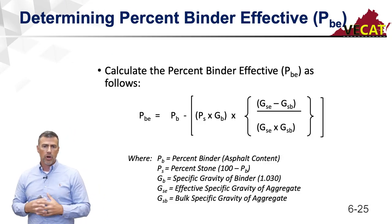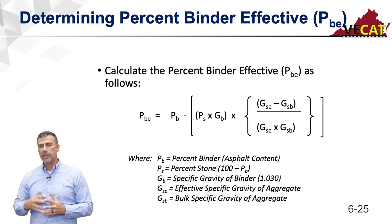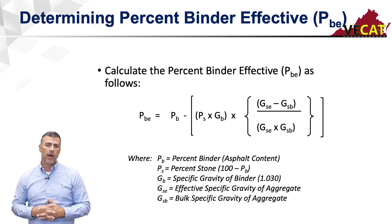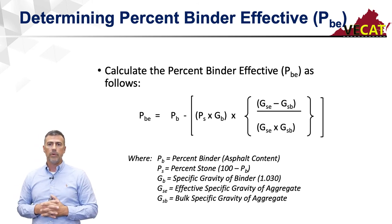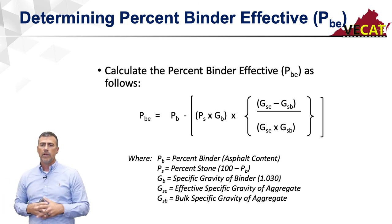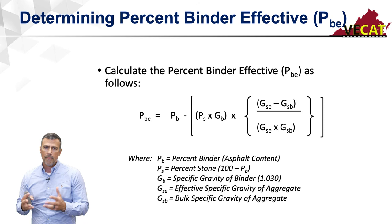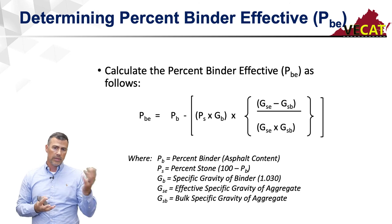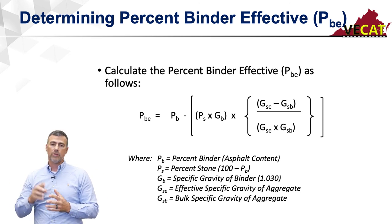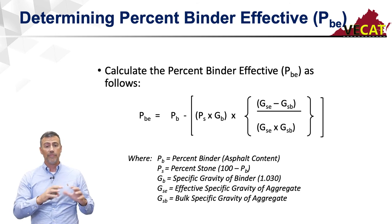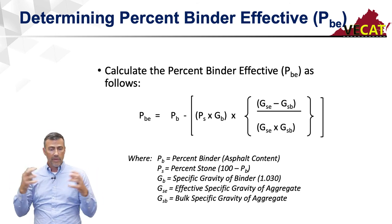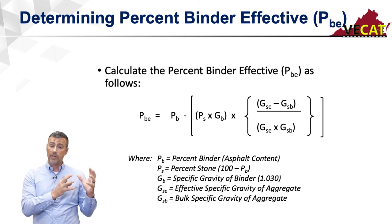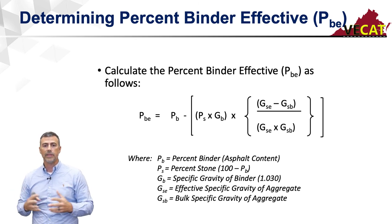The next term — to calculate that final volumetric property, the fines to asphalt ratio, we first need to calculate percent binder effective, PBe. Basically, of our total asphalt or binder content in the mix, some percentage gets sucked into the rock, and the remaining percentage effectively coats particles, fills spaces in the VMA, and gives us durability. I think of it as effective asphalt content and ineffective asphalt content.